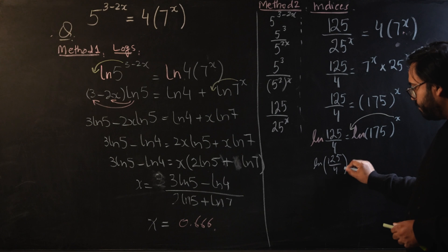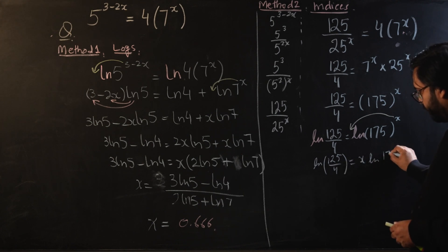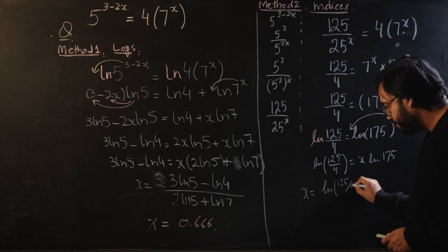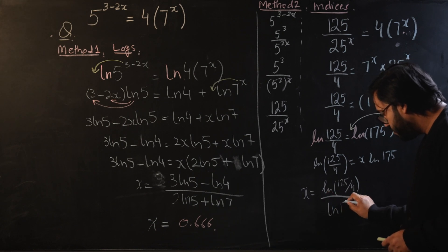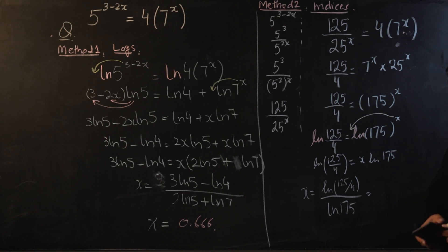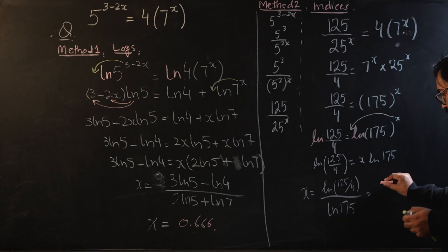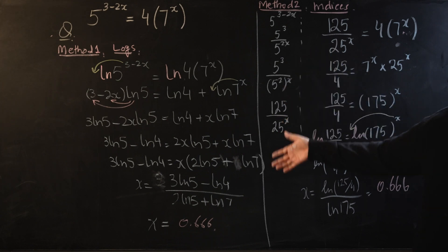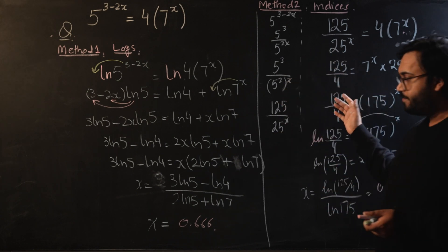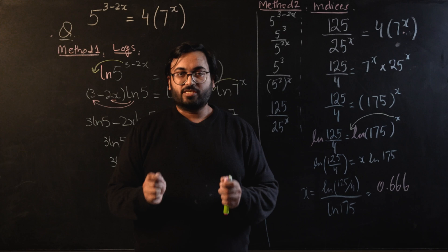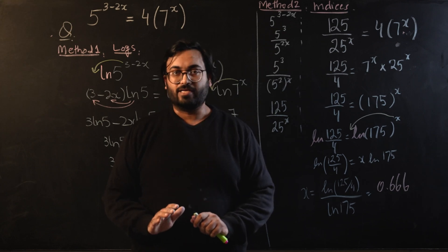So we have log of 125 over 4 equals x times log of 175. Making x the subject: x equals log of 125 over 4, divided by log of 175. Plugging this into the calculator — be careful with brackets — gives us 0.6666, the same answer. Both approaches take roughly the same amount of space and time; it comes down to personal preference.